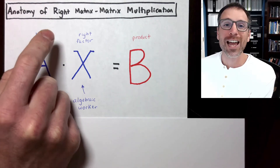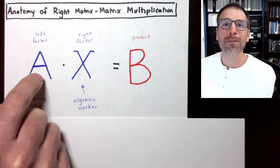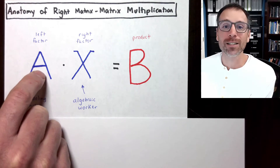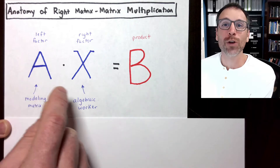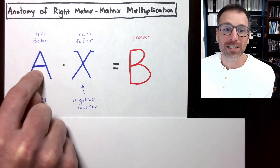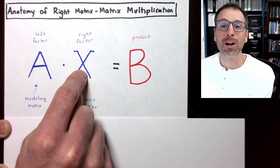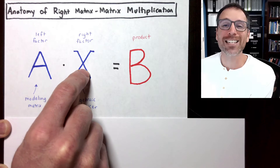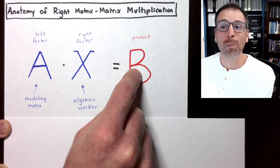The reason we call this right matrix-matrix multiplication is that we assume matrix A arises in some modeling context, and we want to do algebraic work on it to transform it into an equivalent system. Specifically, A is coming from some modeling problem, and X is something we designed to do mathematical work. We're hitting the modeling matrix on the right-hand side with our mathematical worker to produce the product or output B.